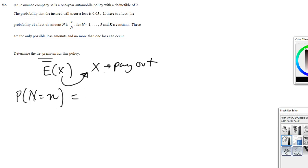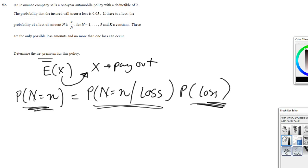But we know that the probability of n equals n given loss times the probability of a loss is equal to this. And we're actually given this and we're given enough information for us to find what this is. So let's figure it out. So we have that the probability of a loss is 0.05.